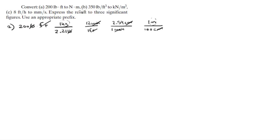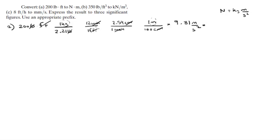To convert kilogram-meters into Newton-meters, we multiply by 9.81 meters per second squared, since one Newton equals one kilogram times meter per second squared. When you plug all these numbers into your calculator, you get 271 Newton-meters.